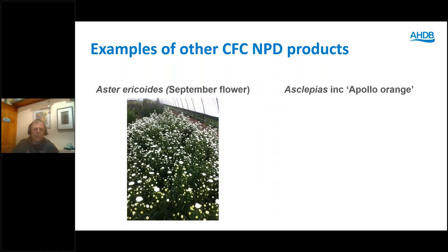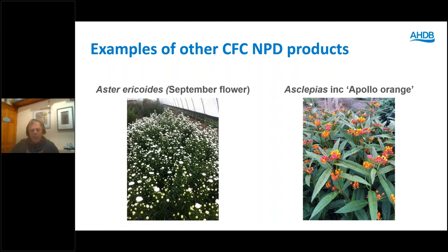Asclepias, including Apollo Orange — this actually looks as if it's got quite a bit of potential and produced quite a bit of interest. But the big issue is that it has a sap similar in milkiness to Euphorbia, not in toxicity. As a consequence, it's quite hard to get it to take up water, so we couldn't really get a reliable vase life out of it. It's not something you're going to put in bunches with a guaranteed vase life until we've been able to crack that.